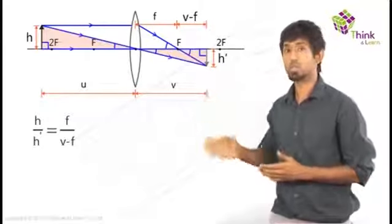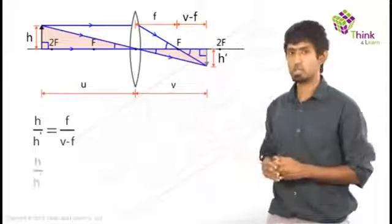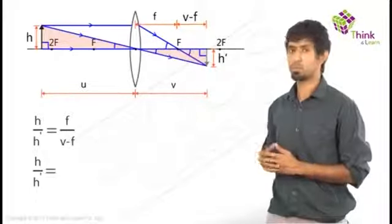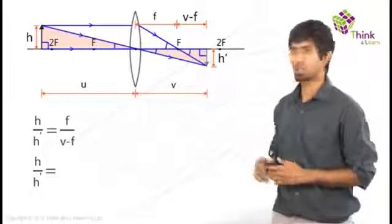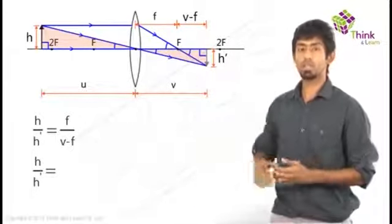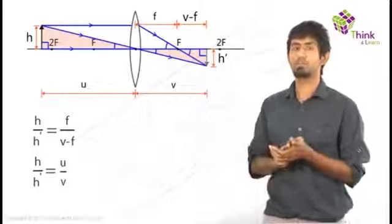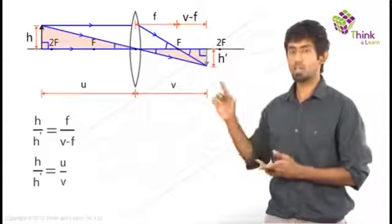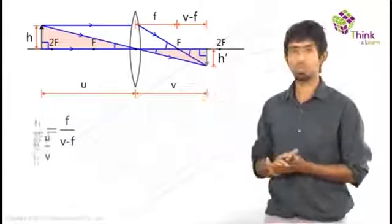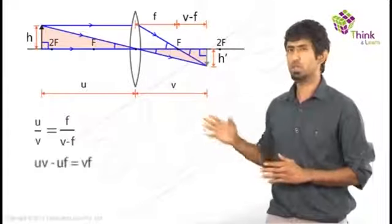Now let's do that for the second equation as well. What do you get here? The same H by H dash. And that's equal to what in this case. The sides are proportional. So it has to be equal to that side by this side. And what do you get now? What is that length? The entire length is U, and this entire length is V. So it's going to be just U by V. Now what do you have here? H by H dash is common. So equate those two. Cross multiply, you get a very similar looking equation, very familiar looking equation.